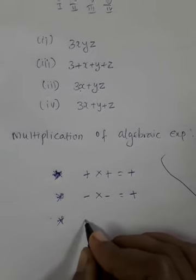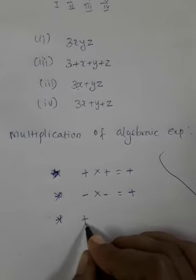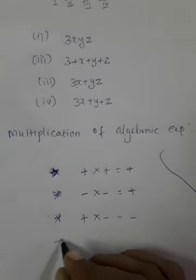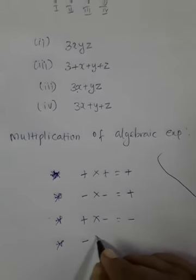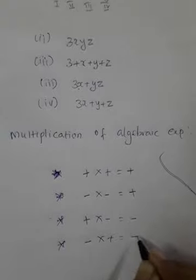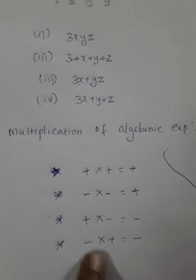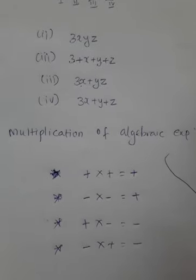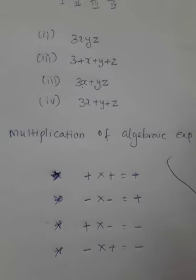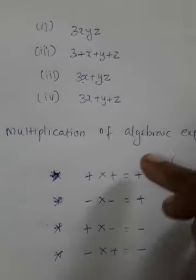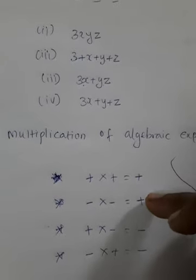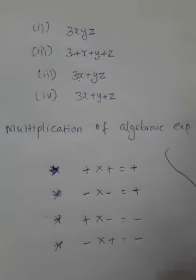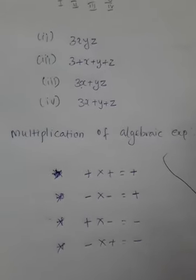Unlike signs are different signs. Plus into minus equals minus. Minus into plus also equals minus. So when you multiply different kinds of signs, the answer is minus. To summarize: if you multiply like signs, the answer is plus; if you multiply unlike signs, the answer is minus.